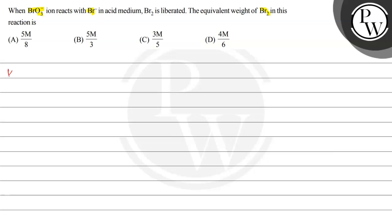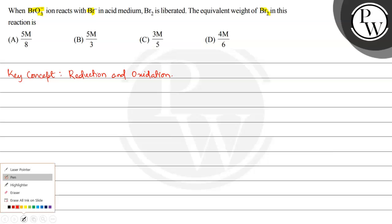The key concept here is reduction and oxidation. The reacting species are BrO3- and Br-, so BrO3- plus Br- gives Br2.